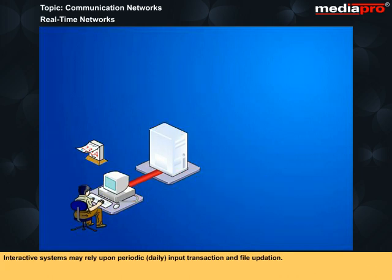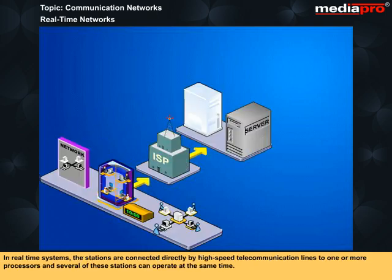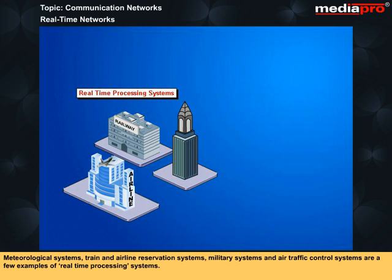While a real-time system always uses interactive processing, an interactive system may not be operating in real-time. Interactive systems may rely upon periodic or daily input transaction and file updation. In real-time systems, the stations are connected directly by high-speed telecommunication lines to one or more processors, and several stations can operate at the same time. Meteorological systems, train and airline reservation systems, military systems, and air traffic control systems are examples of real-time processing systems.